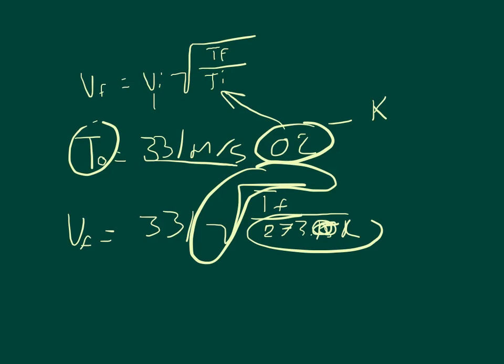The problem is it doesn't give us our temperature in Kelvin, it gives us our temperature in Fahrenheit. And so Celsius equals Fahrenheit minus 32 times 5 ninths.